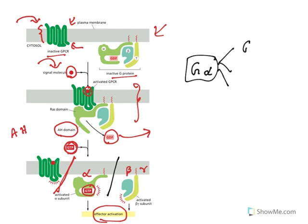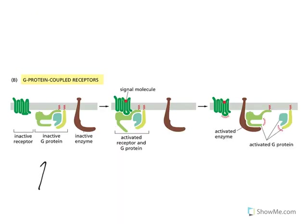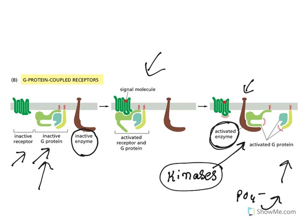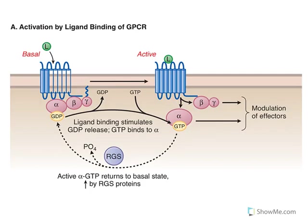There are three different types of G alpha proteins: Gs, Gi, and Gq. When no signal molecule is bound, the receptors are inactive, the G protein is inactive, and the internal enzymes are also inactive. Once the signal molecule binds, the dissociated proteins will activate enzymes. The major pathway by which internal proteins are activated is by kinases — kinase means attaching a phosphate group. Attachment of the phosphate group activates many enzymes and internal protein molecules, and most G proteins act by activating kinases.